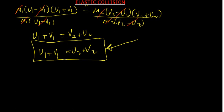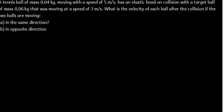So for elastic collision, kinetic energy is conserved and we use U1 + V1 = U2 + V2, and momentum is conserved using M1U1 + M2U2 = M1V1 + M2V2. Now let's consider this problem: a tennis ball of mass 0.04 kg moving at 5 m/s has an elastic head-on collision with a target ball of mass 0.06 kg moving at 3 m/s.